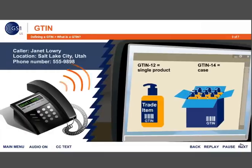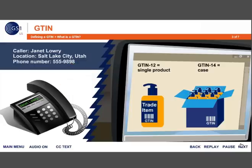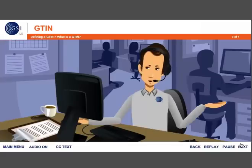G10-12? G10-14? What are those? These are simply terms for identification numbers. Many people refer to a G10-12 as a UPC, but we always refer to it as a G10-12. Similarly, the G10-14 has been called a shipping container code, or SCC, in the past, which is an outdated term. Let's take a step back to help you understand this.